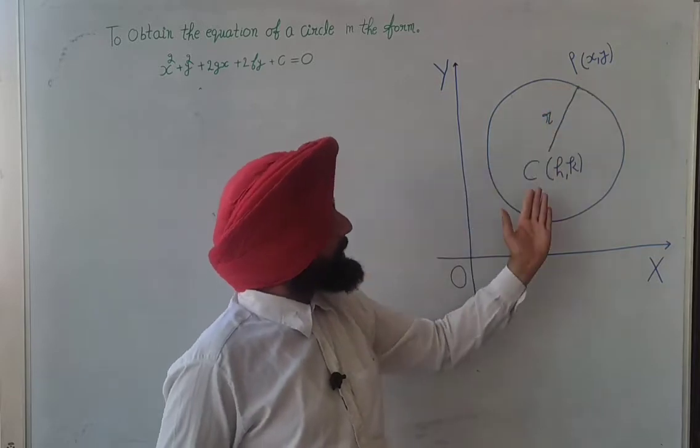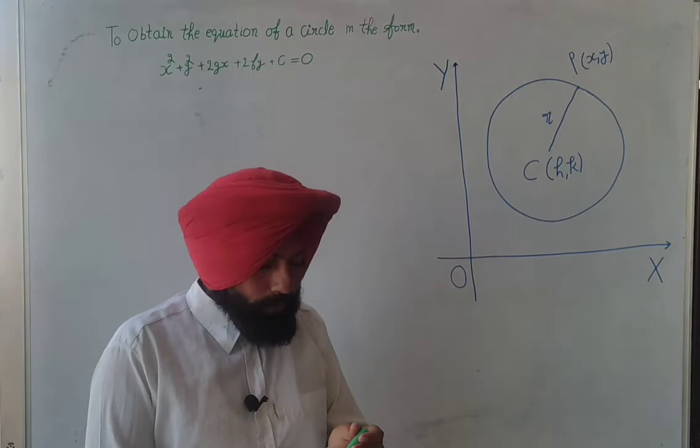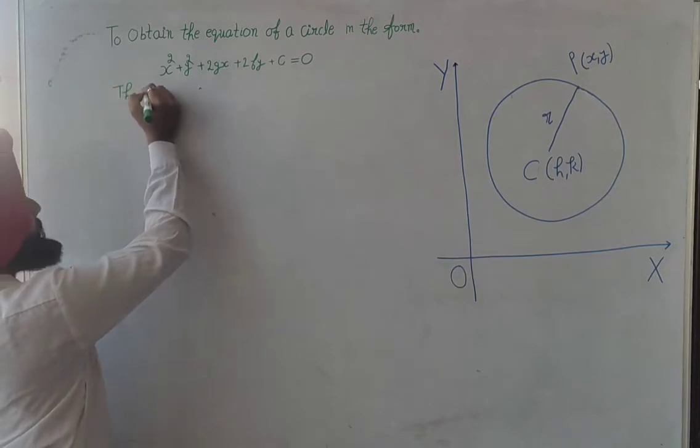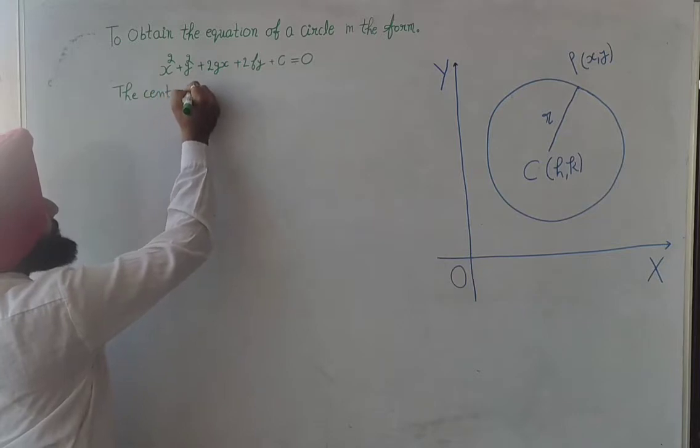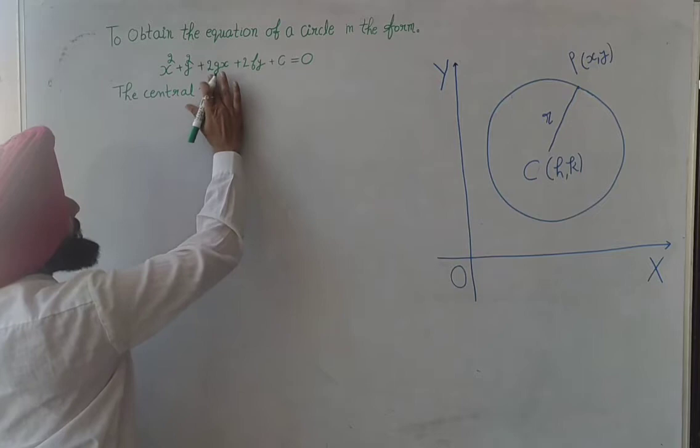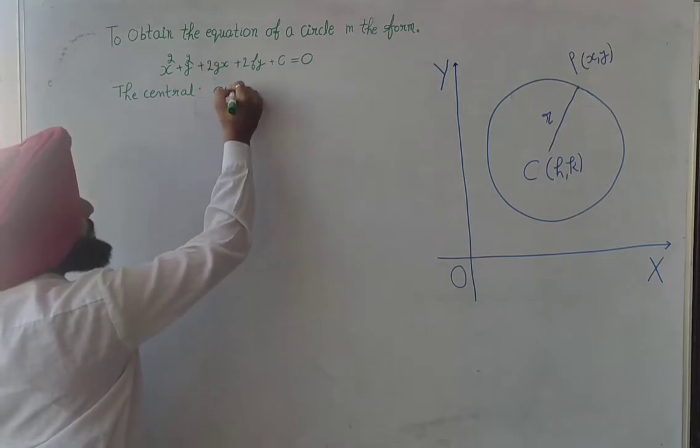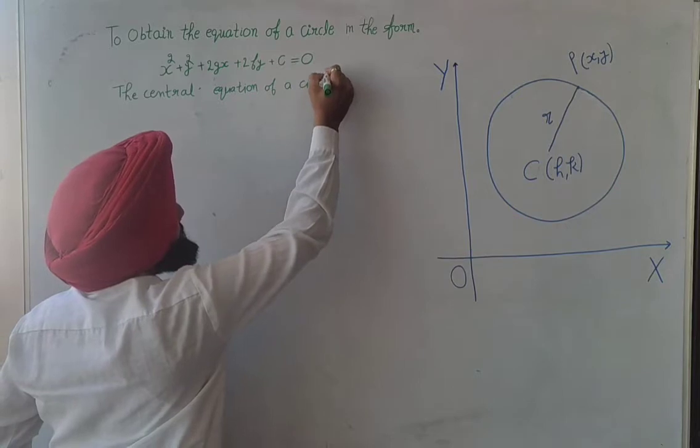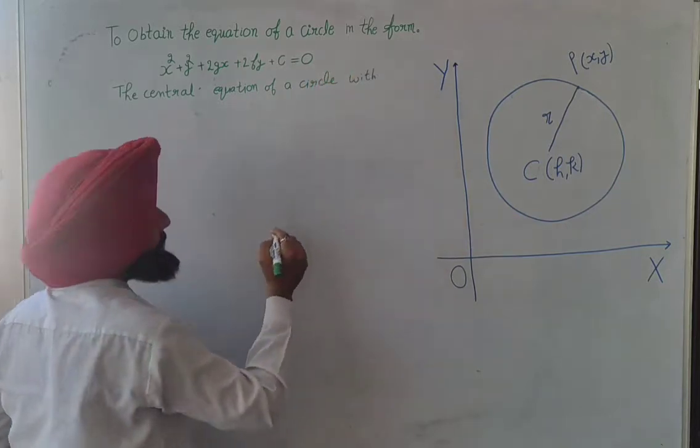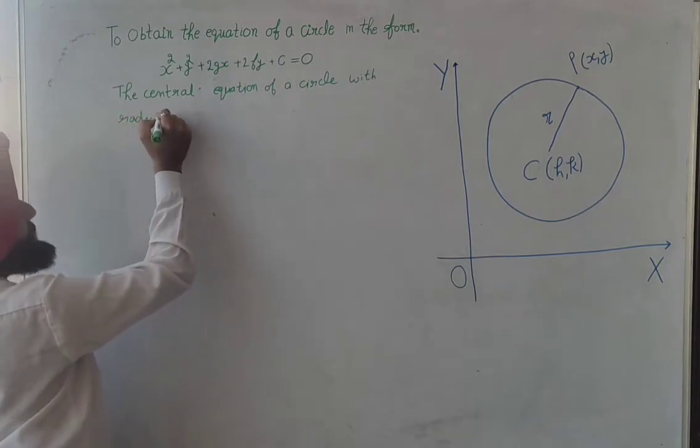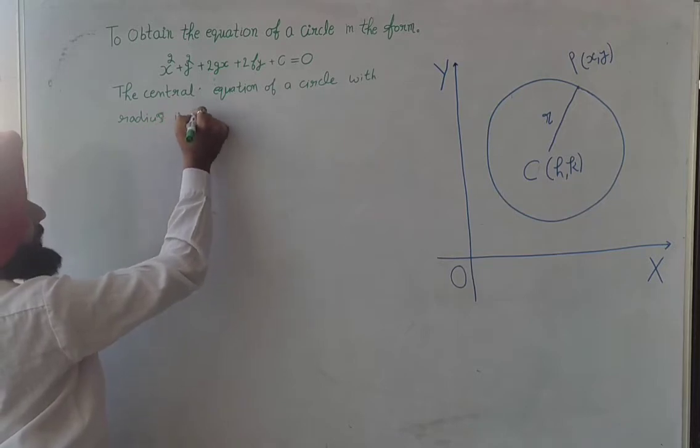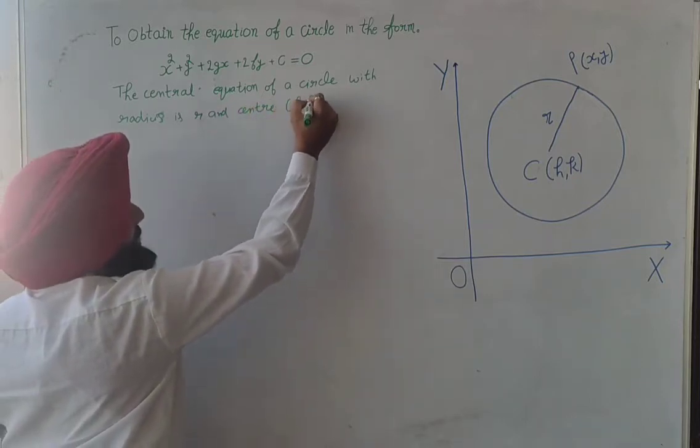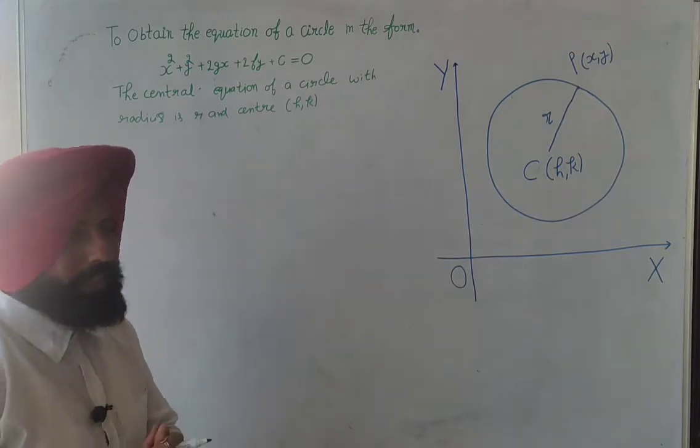With coordinate x,y, center h and k, and radius r, the central equation of a circle with radius r and center (h,k) is...